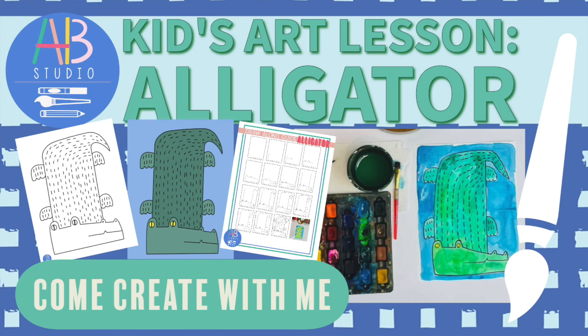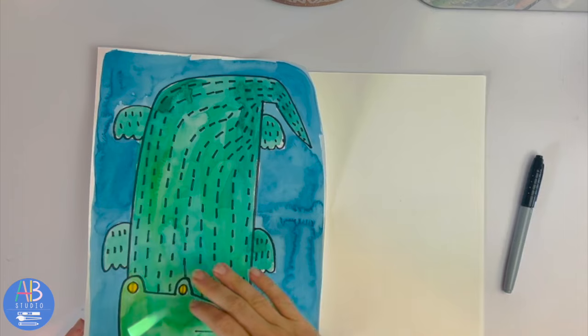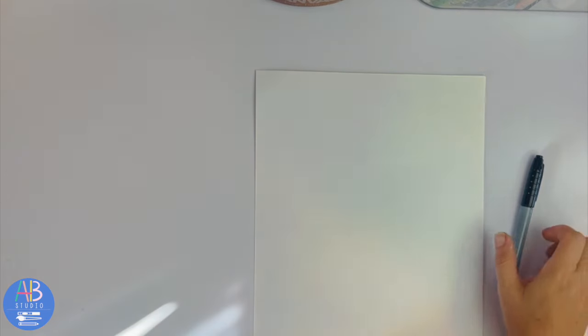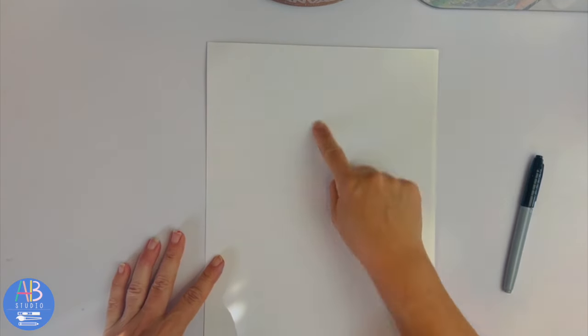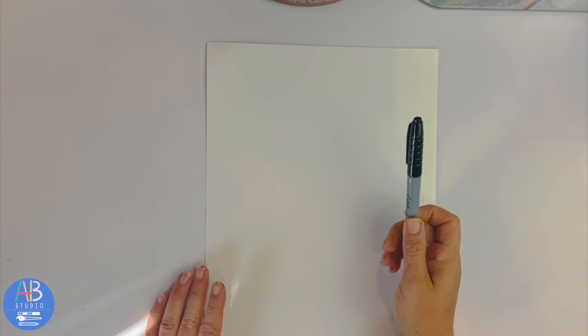Okay, step one: drawing the alligator. We're going to be using the whole paper for the body and then the head's gonna be on the bottom. First thing, we've already got our white paper - it is vertical top to bottom. I already have my name on it. I'm gonna be using my permanent marker to draw.